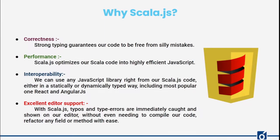Moving forward, why Scala.js? There are a few key points. Since Scala has strong types, there are fewer chances of silly mistakes. And when Scala code is converted into JavaScript, it is the optimized version. Performance is very important — we always need performance with JavaScript, with JVM, in this fast-moving world. When the Scala code is converted into Scala.js, it is being optimized at that time, so the JavaScript code we get at the end is the optimized one.